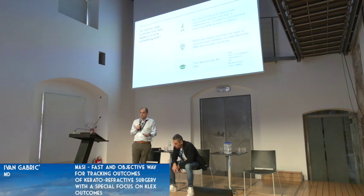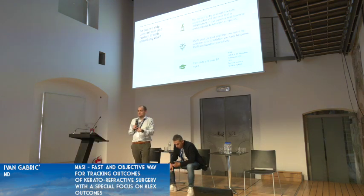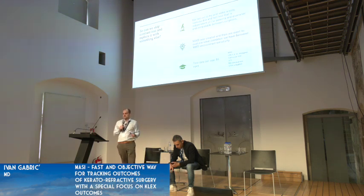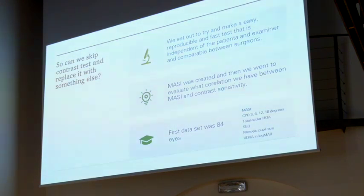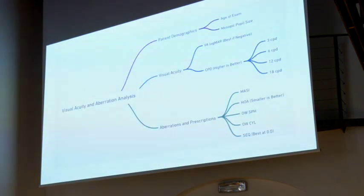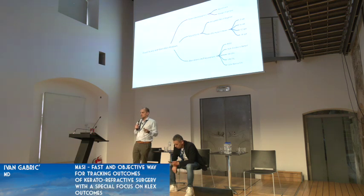So we set out to see if we can skip the contrast testing and use something objective to simulate contrast sensitivity. We took MASI as a starting point. We took 84 eyes where we measured MASI, contrast sensitivity at 3, 6, 12, and 18 degrees, total ocular higher orders, spherical equivalency, mesopic pupil size — because we're testing contrast in mesopic conditions at about 5 millimeter pupils — and unaided visual acuity in LogMAR. That was the decision tree for creating the protocol.